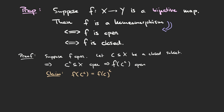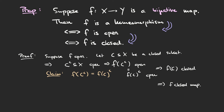Returning to the main proof: we've assumed f is an open map and shown that for a closed subset C of X, f(C^c) is open in Y. We've now shown that f(C^c) equals the complement of f(C), so the complement of f(C) is open, which by definition means f(C) is closed. This is exactly what we needed — we took some closed set and its image is again closed, showing f is a closed map. This concludes the proof that a bijective open map is also closed.